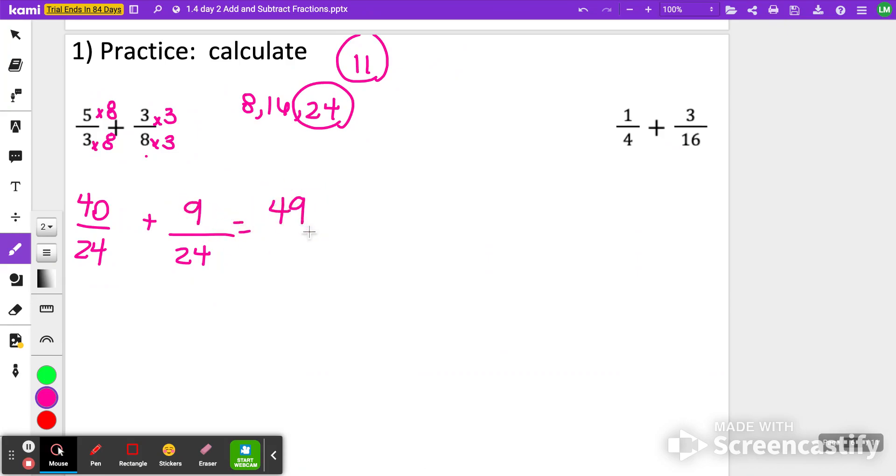When I add them together, I get 49 on the top, so I'm just doing 40 plus 9. And because I worked hard to get that denominator, I'm going to keep the denominator the same. 49, 24 cannot be simplified, so we're going to keep it like it is.